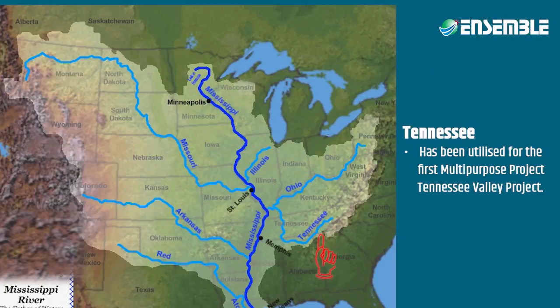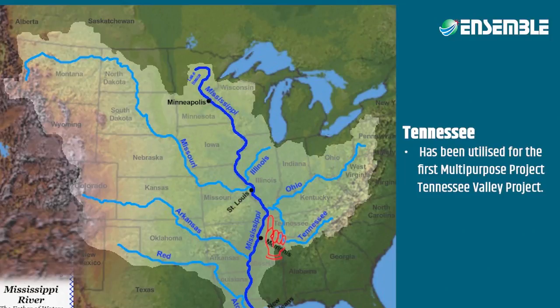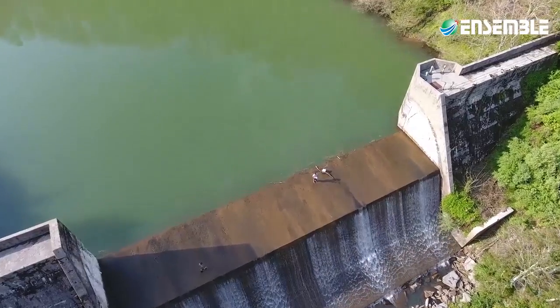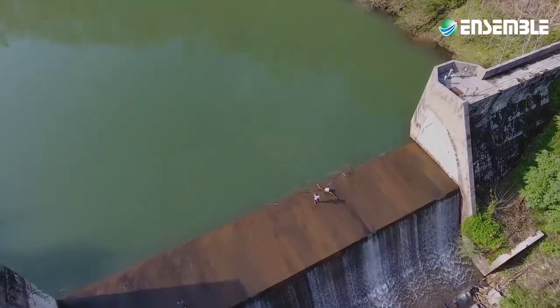The Tennessee River has been used for hydropower projects. The first and largest multi-purpose river project taken up at that point in time was called the Tennessee Valley Authority.